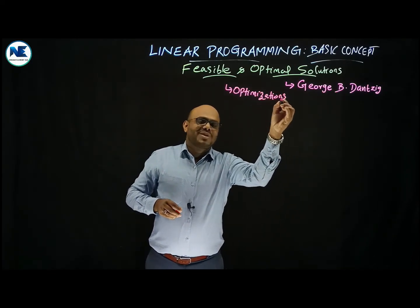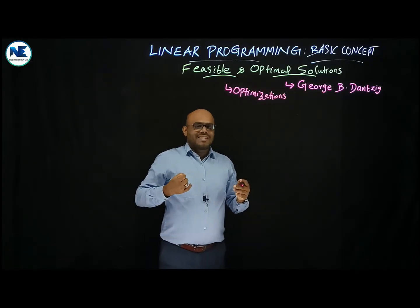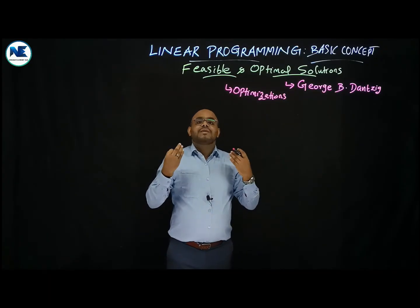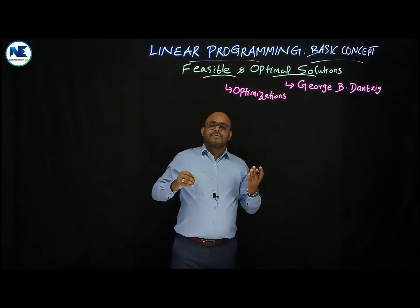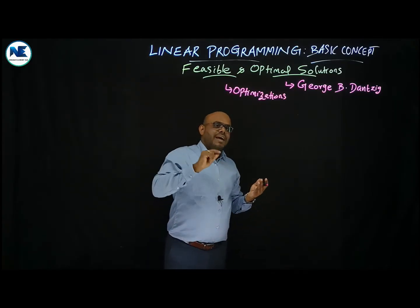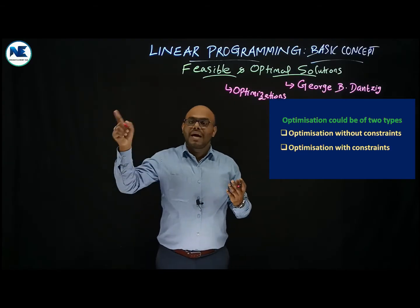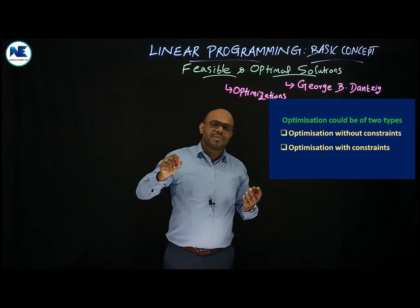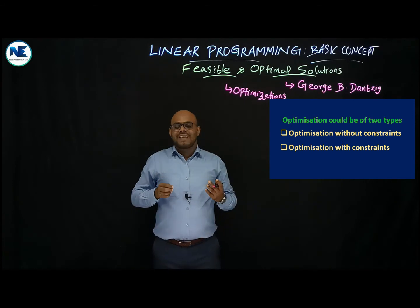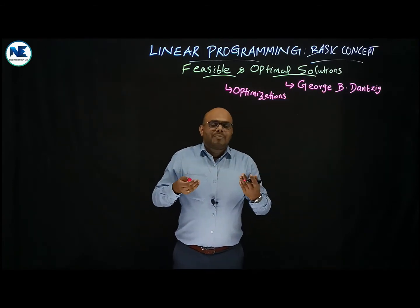Optimization covers reward problems such as utility maximization, cost minimization, and profit maximization — each involving first order conditions and second order conditions. We also have optimization without constraints, covering maxima and minima with first and second order conditions.